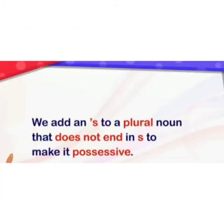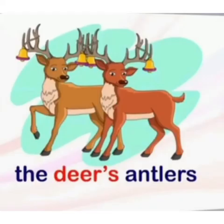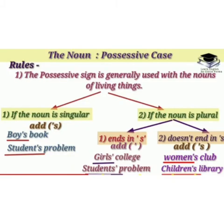Rule 3: We add an apostrophe S to a plural noun that does not end in S to make it possessive. For example: the deer's antlers. Deer is a plural noun whose plural form is also deer, so we add apostrophe S — deer's antlers. These are the rules to be followed to form possessive nouns.